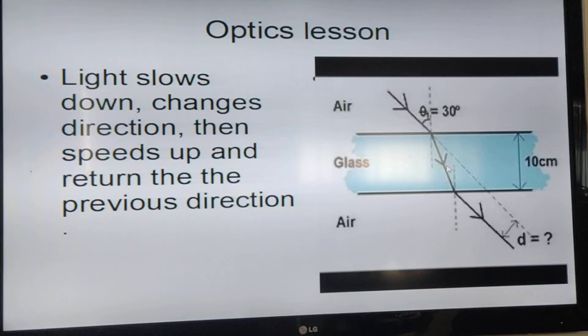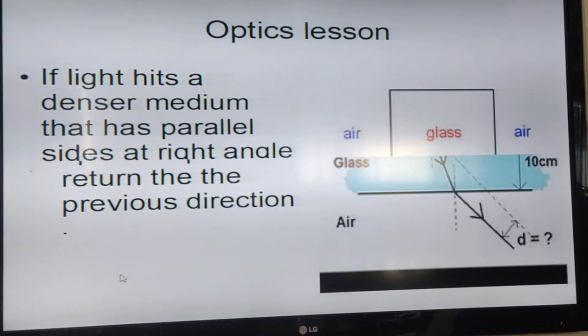Light going from air to glass or water bends toward the normal, then when it comes out it speeds up and bends away from the normal. It basically goes in a straight line but it's offset by a certain amount depending on the density of the material, the index of refraction of the material itself.